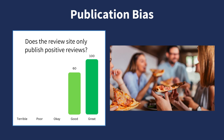The last item is publication bias. Publication bias is when there is missing or hidden information. For example, if you knew that the restaurant can control what reviews are published, you might suspect that the restaurant only publishes the positive reviews. Being unsure about the results because you think there is hidden information is an example of publication bias.